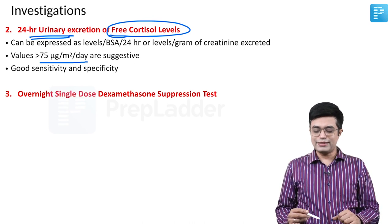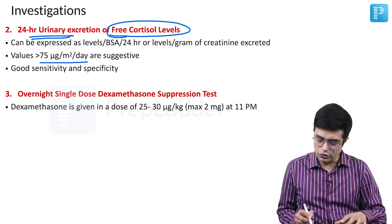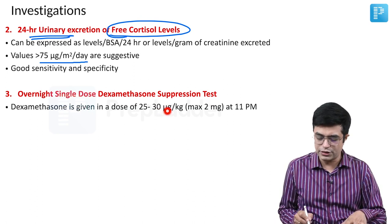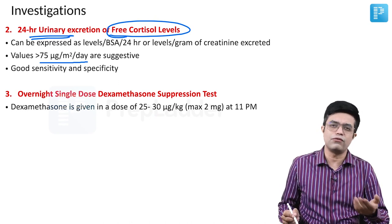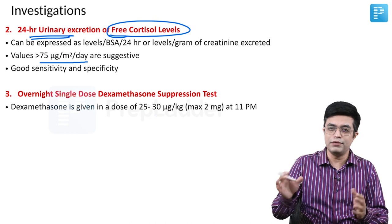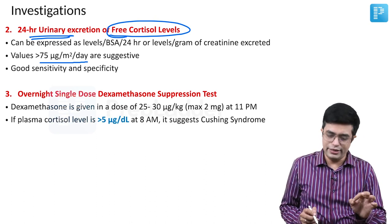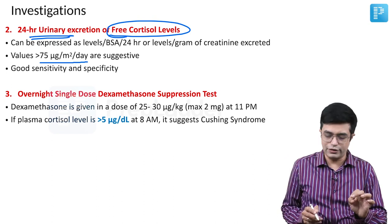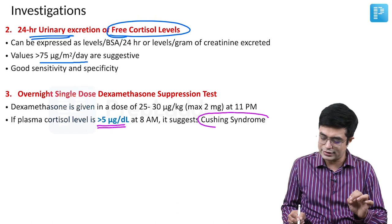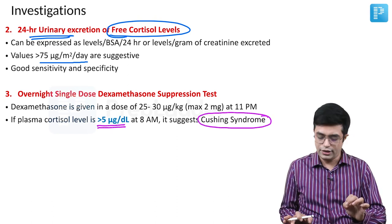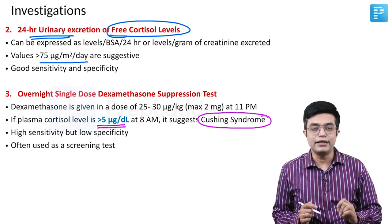The third screening test is the overnight single-dose dexamethasone suppression test. Dexamethasone is given at 25–30 mcg/kg (maximum 2 mg) at 11 pm, and plasma cortisol is checked at 8 am. If plasma cortisol is more than 5 mcg/dL, it suggests Cushing syndrome. This test has high sensitivity but low specificity.